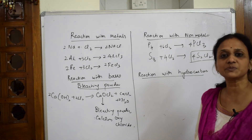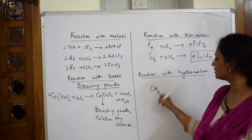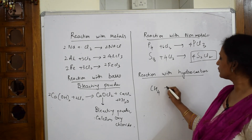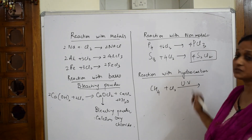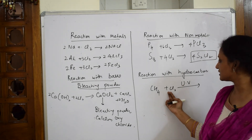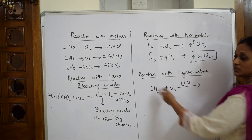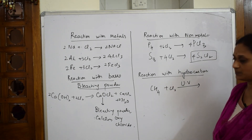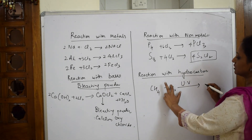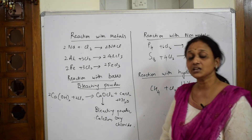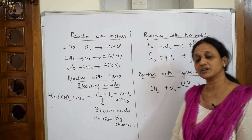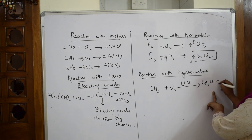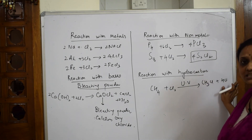Reaction with hydrocarbons: methane undergoes free radical halogenation. Chlorine is added in the presence of ultraviolet light, which releases the free radical. Each time, one chlorine substitutes one hydrogen. In the first step, one chlorine replaces a hydrogen to give CH₃Cl, with HCl as a byproduct. This continues until you get CCl₄.